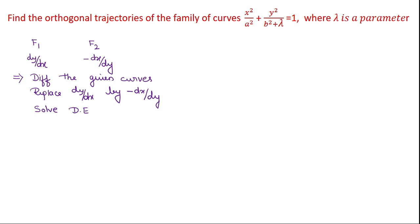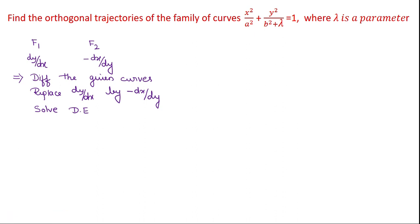Here, we are finding the orthogonal trajectory of the family: x²/a² + y²/b² + λ = 1, where λ is the parameter. Given that λ is the parameter, write the given equation as x²/a² + y²/b² + λ = 1.